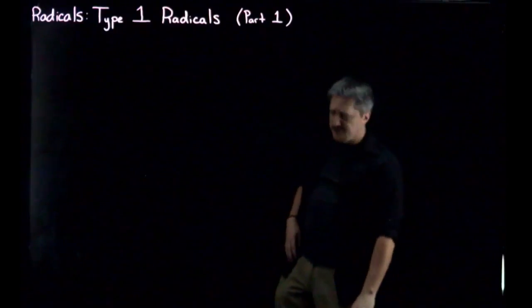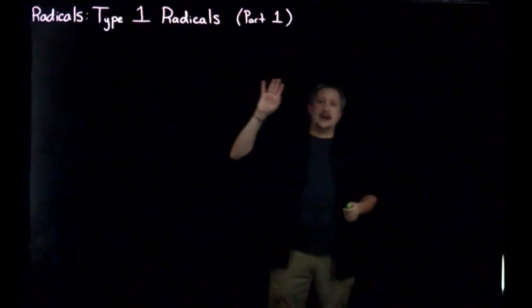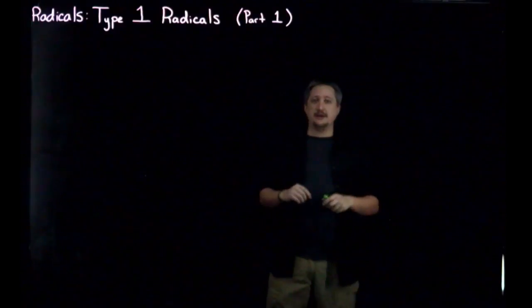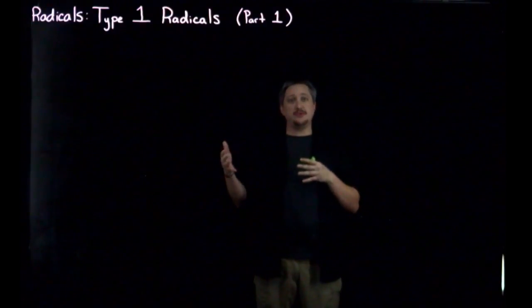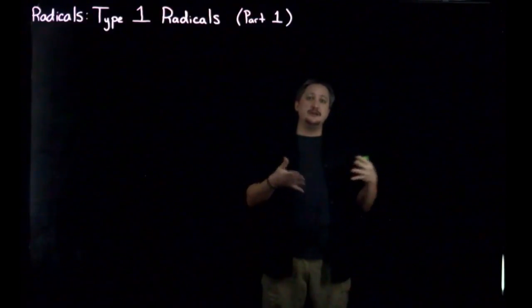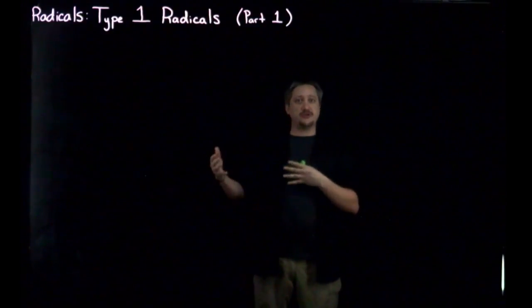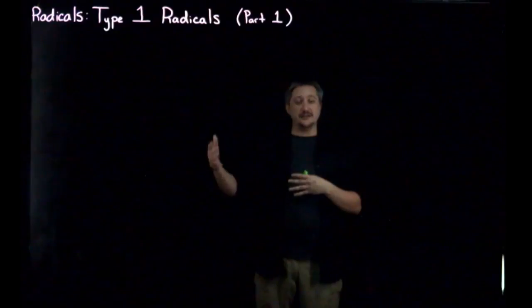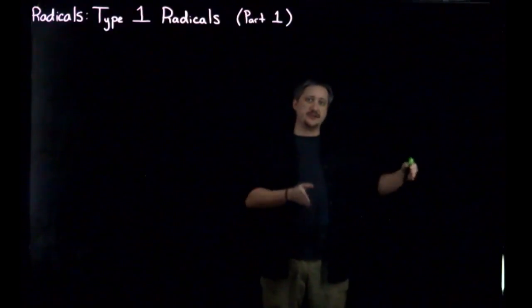This video is going to go through how to simplify a Type 1 sort of in general, and I will give a couple explicit examples with odd root values. Just know that even root values have a couple extra steps I'll mention toward the end of the solution process that we'll actually discuss in the next video.